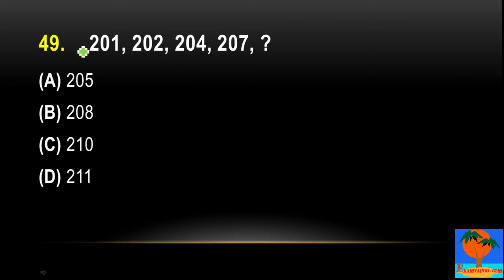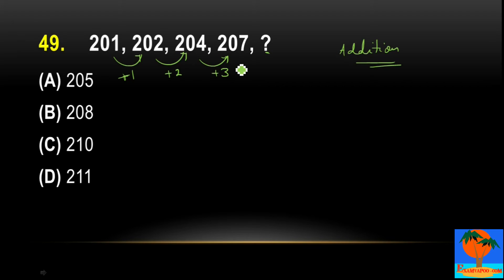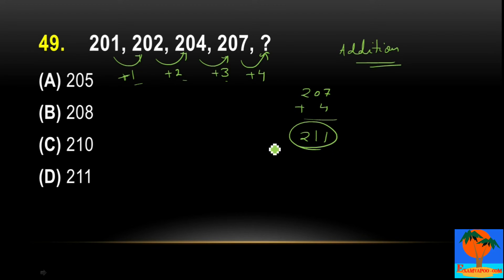Question 49: the series is 201, 202, 204, 207 — find the next term. The terms are not increasing rapidly, so addition is involved. The differences are: 202 − 201 = +1, 204 − 202 = +2, 207 − 204 = +3. The differences increase by 1 each time, so the next difference is +4. Therefore 207 + 4 = 211 is the next term.